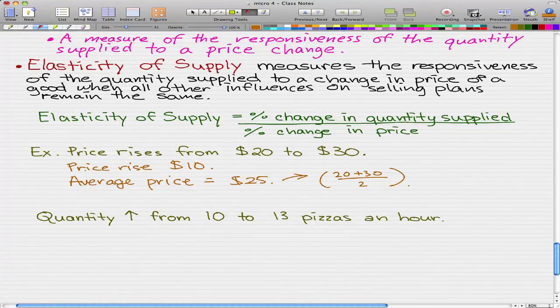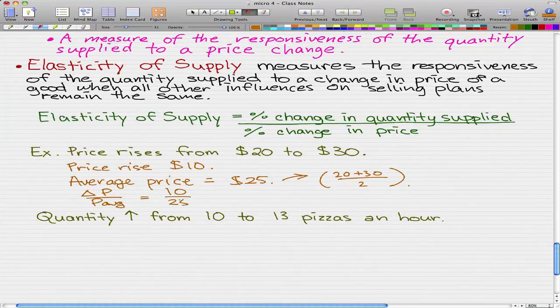Now that we have that, we can get the percentage change in quantity supplied. That is simply the change in price over the P average, or the average price. That is equal to $10 over $25, which is 0.4, and then we times that by 100 to give us 40%.